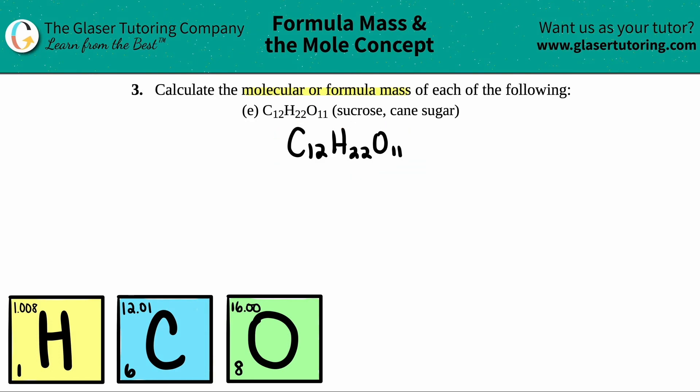So for example, I see three different elements here. I have a C, which stands for carbon. I have an H, which is hydrogen, and I have an O. So I have three different elements in my formula. So I'm just going to write them out. C, H, and O.